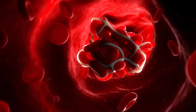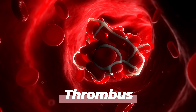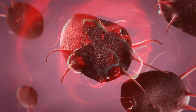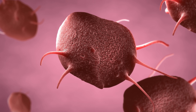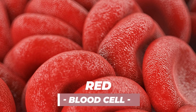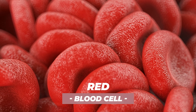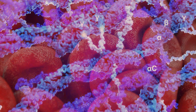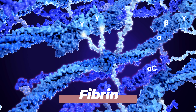A blood clot, or what's more properly known as a thrombus, actually has three different components to it. The first is going to be platelets or thrombocytes — these are sticky cells that are very integral to the blood clot structure itself. You're also going to have red blood cells, which carry oxygen and carbon dioxide. You're also going to have a very tough protein called fibrin, and we'll go into more detail with fibrin in just a second.